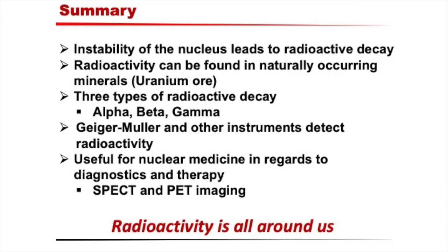As we have shown in these demonstrations, radioactivity is a natural phenomenon that has been used for important applications in society. To summarize the main points: radioactivity occurs when a nucleus is unstable because of an incorrect ratio of protons and neutrons. Radioactivity is natural and found in deposits of uranium, an element that is much more naturally abundant than things like gold or silver. There are three main types of radioactive emissions — alpha particles, beta particles, and gamma rays. We can use Geiger counters and other instruments to detect radioactivity. Radioactivity is a crucial part of nuclear medicine to find various diseases and conditions using SPECT and PET imaging. Despite the general fright and concerns around radioactive materials, nuclear medicine has undoubtedly saved many lives through its implementation.